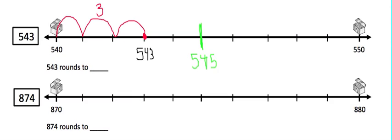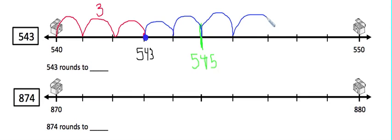How far away is 543 from 550? We're going to start at 543 again and jump forward to 550, so count the jumps with me again: one, two — puts us at the midpoint — three, four, five, six, seven. So we know that 543 is seven numbers away from 550.